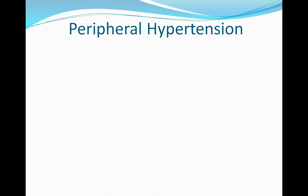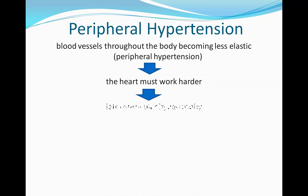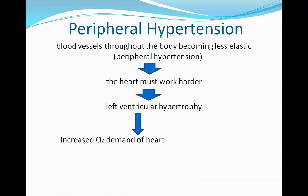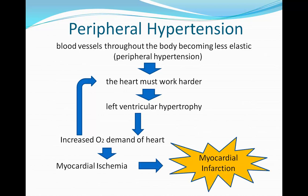In peripheral hypertension, blood vessels throughout the body become less elastic. This causes blood flow to not go as readily through the circulation. As a result, the heart must work harder and the left ventricle hypertrophies. Left ventricle hypertrophy increases the oxygen demand of the heart, causing even more oxygen demand in a feedback system. Eventually, this will lead to myocardial ischemia and to myocardial infarction.